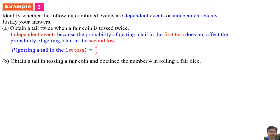The probability of getting a tail in the first toss is 1 over 2, because there is only one tail in a fair coin — a fair coin has a head and a tail. The probability of getting a tail in the second toss is also 1 over 2. No matter how many times the coin is tossed, the probability of getting a tail or a head is always 1 over 2.